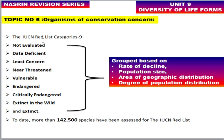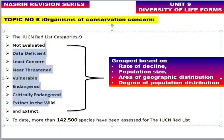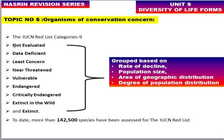Topic six is organisms of conservation concern. The IUCN Red List groups organisms based on rate of decline, population size, area of geographic distribution, and degree of population distribution. There are nine categories in order: Not Evaluated, Data Deficient, Least Concern, Near Threatened, Vulnerable, Endangered, Critically Endangered, Extinct in the Wild, and Extinct.